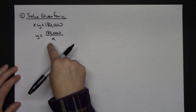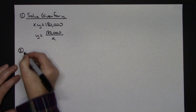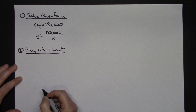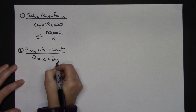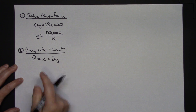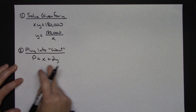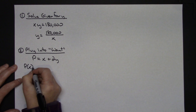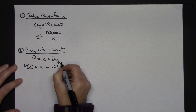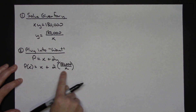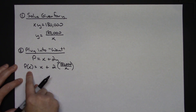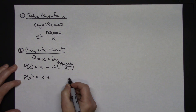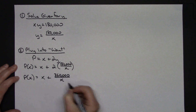Step two: plug this into the want. My original want equation was perimeter equals X plus 2Y. I take the Y value and plug it in for Y. Since it's now all in terms of X, I switch to function notation: P of X equals X plus 2 times 180,000 over X. Simplifying, P of X equals X plus 360,000 over X.